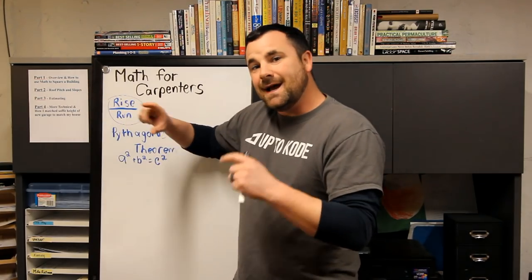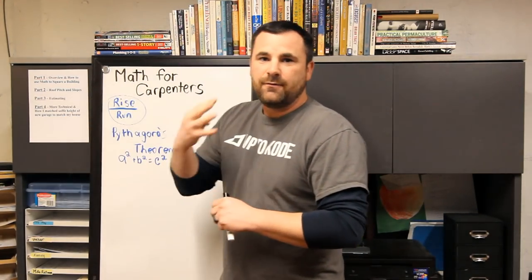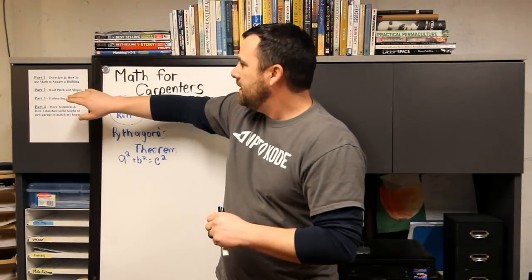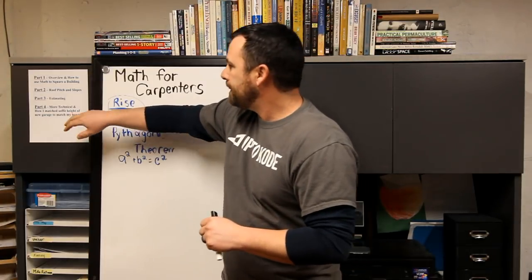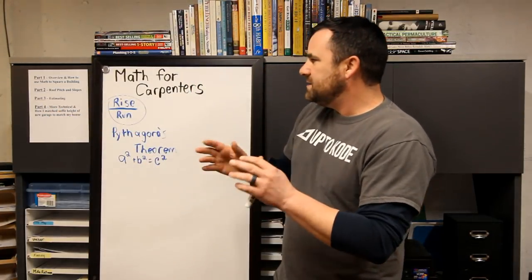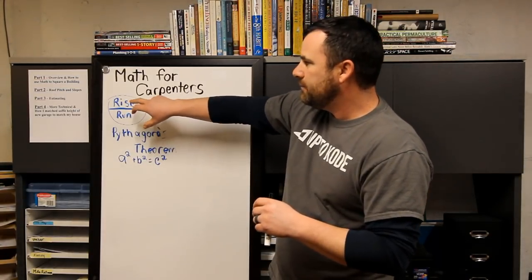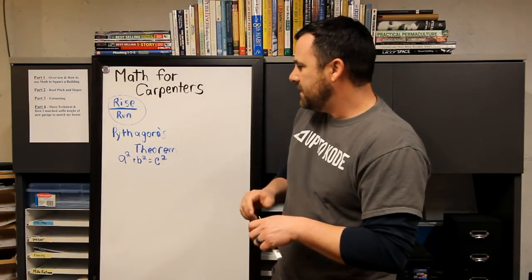I'm going to make this a four-part series. Part one today is just giving you the overview and how to use two styles to square up a building with a couple examples. Part two is roof pitches and slopes, manipulating rise over run, because that's a major portion of math for carpenters, and so is Pythagorean theorem.